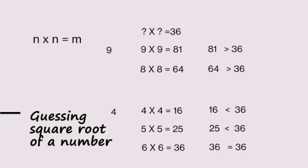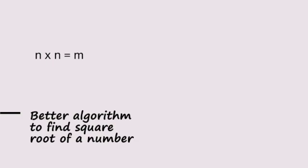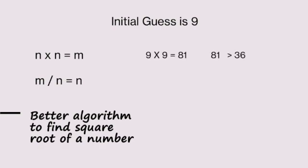How many iterations will this take? This is the guesswork method. Suppose initial guess is 6, we will find out the answer. We will find a better algorithm. Since n into n equals m, I can rewrite it as m divided by n equals n. For 36, initial guess is 9. 9 squared is 81, greater than 36.